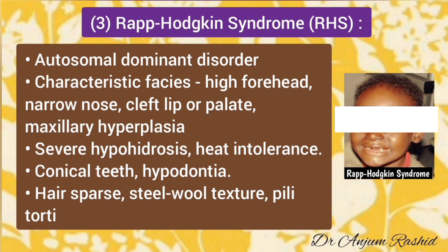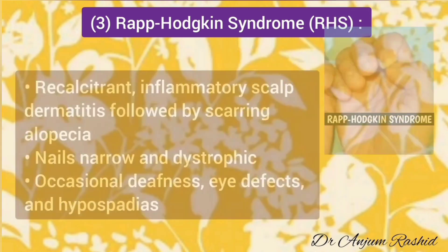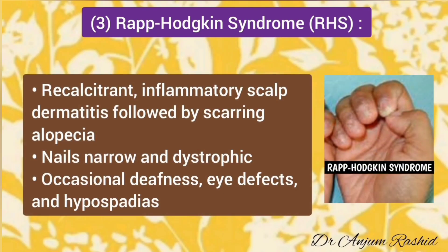The third ectodermal dysplasia syndrome is Rapp-Hodgkin syndrome, an autosomal dominant disorder. Patients have characteristic faces including high forehead, narrow nose, cleft lip or cleft palate, and maxillary hypoplasia. There is severe hypohydrosis and heat intolerance. Teeth are conical or there may be hypodontia. Hair is sparse with a steel wool texture. A recalcitrant inflammatory scalp dermatitis is common and may lead to scarring alopecia. Nails are usually narrow and dystrophic. Occasional anomalies include deafness, eye defects, and hypospadias.